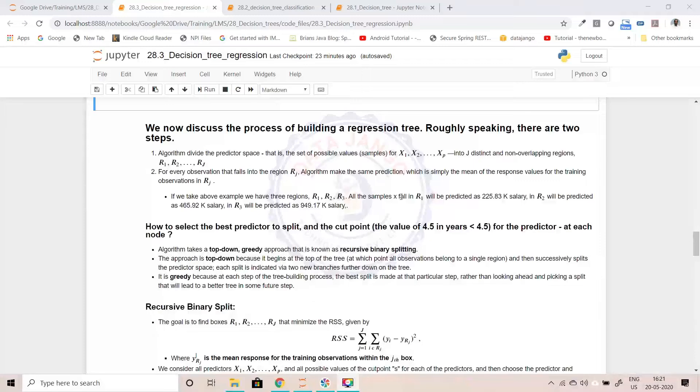So we have seen that. R1, R2, R3. For R1, the prediction is going to be, all the records falling in R1, the prediction is going to be 225.83. All the records falling into R2, the prediction is going to be 465.92. For all the records falling in R3, the prediction is going to be 949.17.